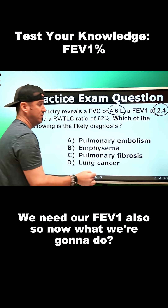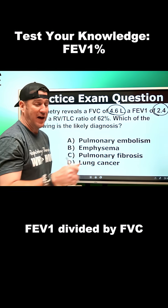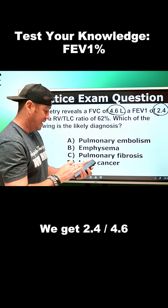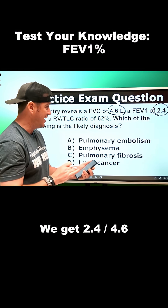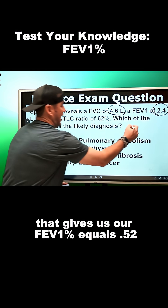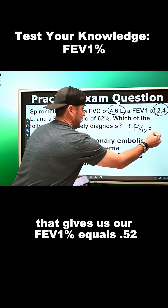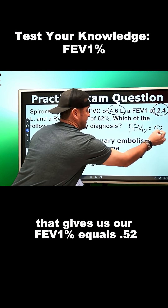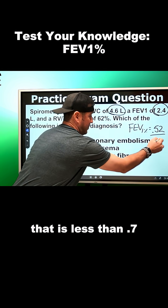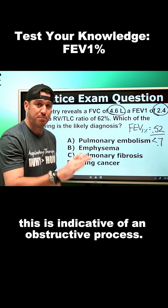We need our FEV1 also. So now what we're going to do is FEV1 divided by FVC. When we do that, we get 2.4 divided by 4.6, which gives us an FEV1% of 0.52. That is less than 0.7, and therefore this is indicative of an obstructive process.